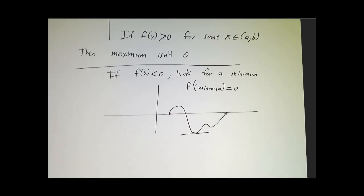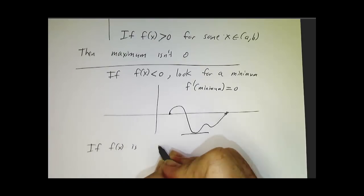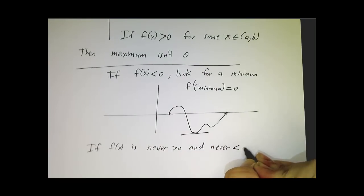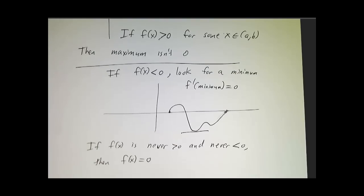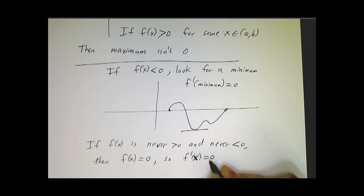So what if the function doesn't ever get positive and never gets negative? Well, if it's never positive and never negative, then the function is zero everywhere. So the derivative of zero is zero. In that case, it's zero throughout.